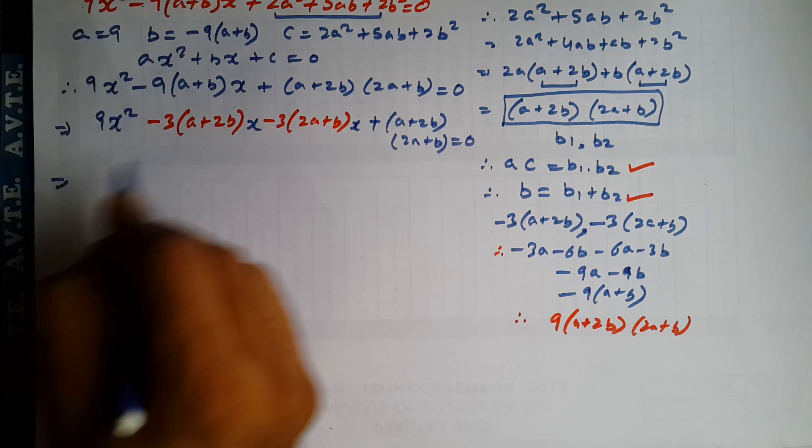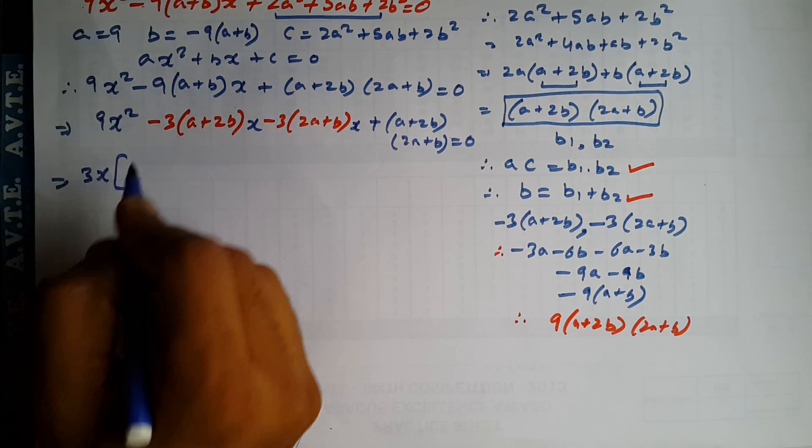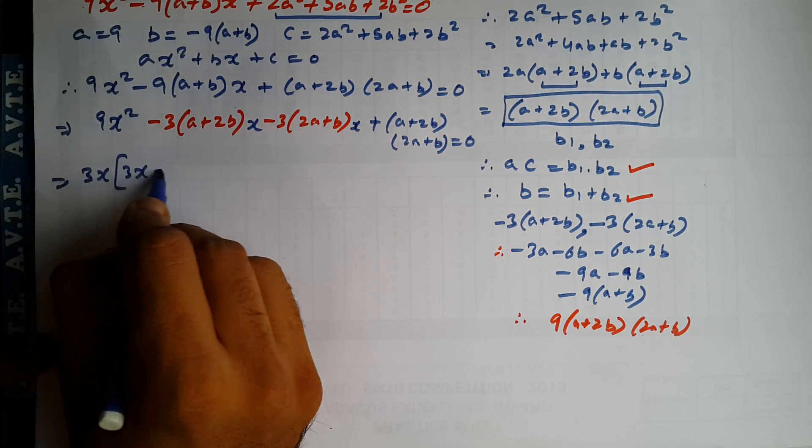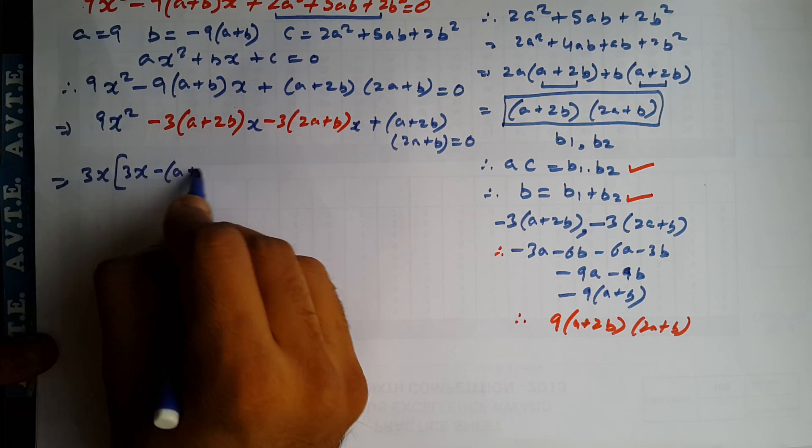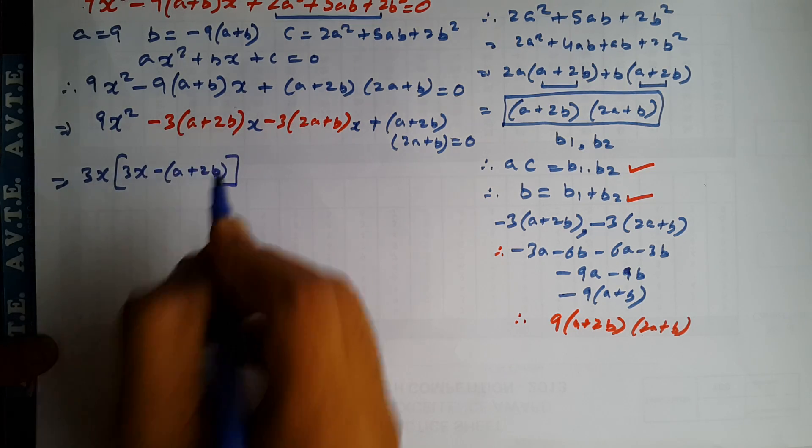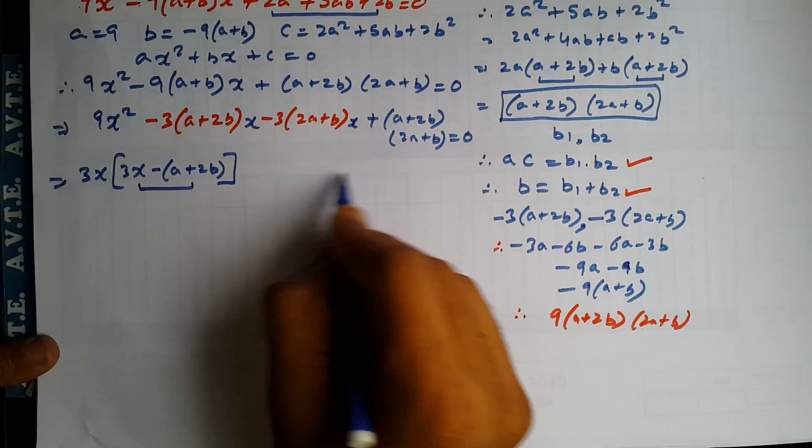Now you take common from here. 3X you will get 3X minus A plus 2B bracket closed. And the same factor will appear here.